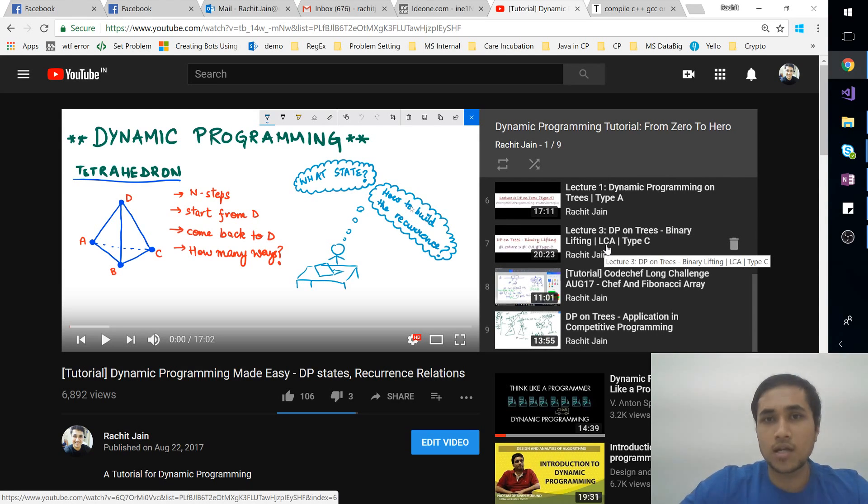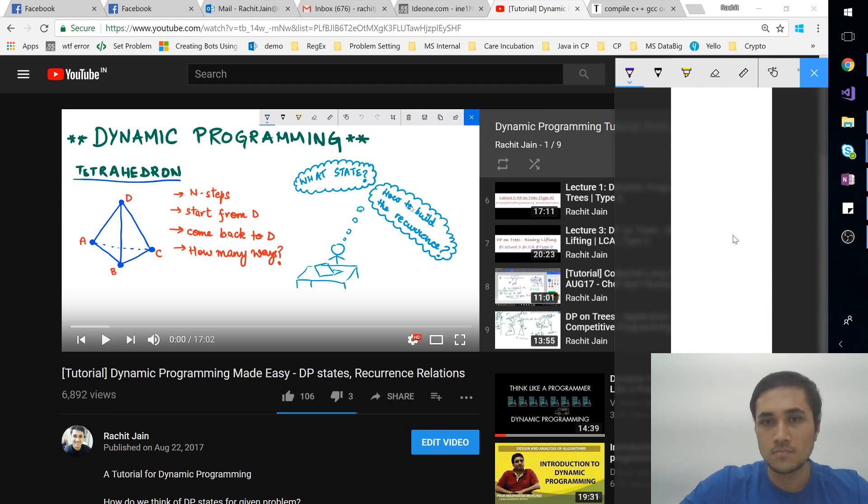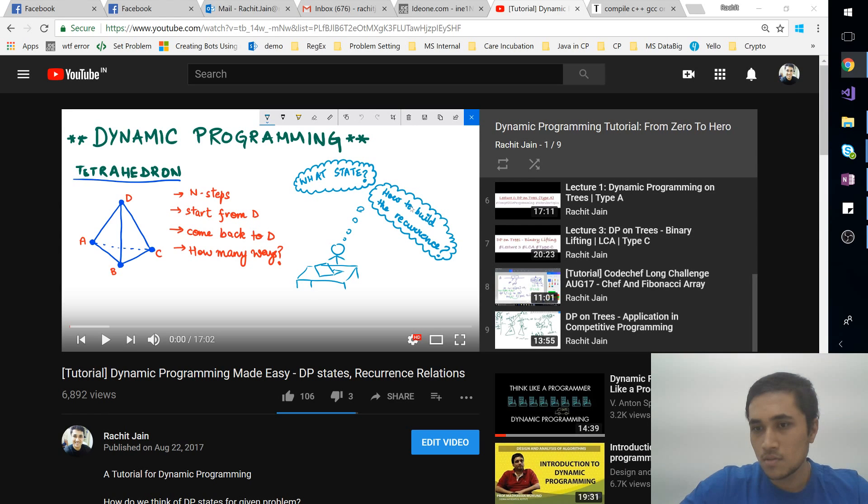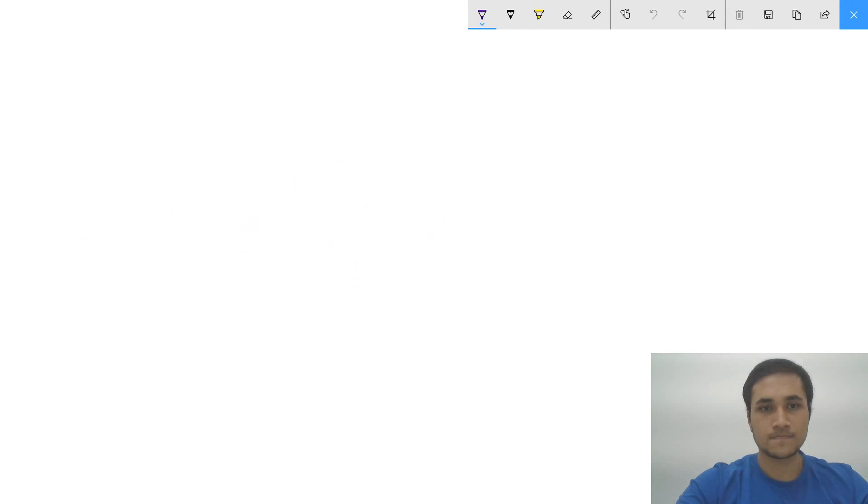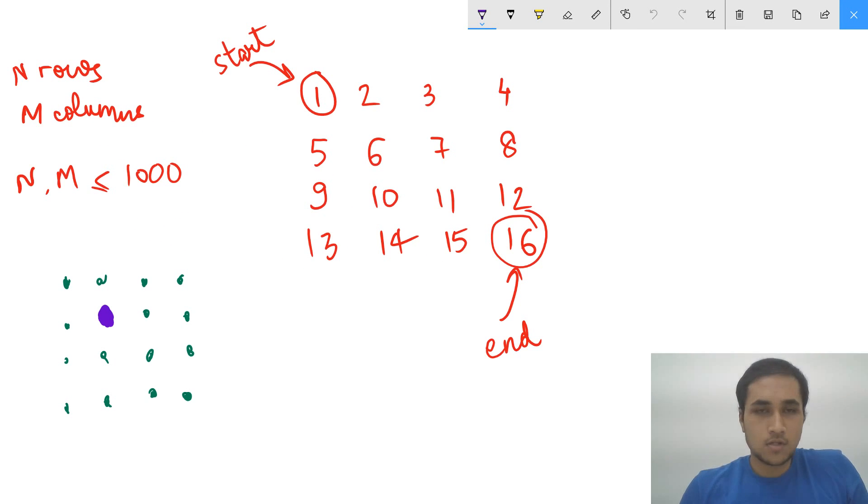So the problem I'm talking about today will be based on a matrix. Let's dive into the problem. We have a matrix of n rows and m columns where n and m both can be up to a thousand.